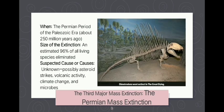The third major mass extinction is the Permian mass extinction, which occurred during the Paleozoic era about 250 million years ago. An estimated 96% of all living species were eliminated. This is the largest of all known mass extinctions and has been dubbed the 'Great Dying.' Aquatic and terrestrial life forms alike perished relatively quickly. The suspected causes — possibly asteroid strikes, volcanic activity, climate change, and microbes — are still largely a mystery.